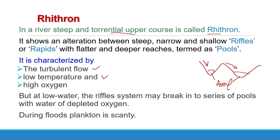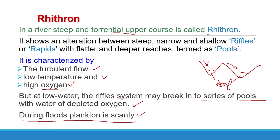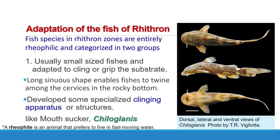The Rhithron is characterized by turbulent flow and relatively low temperatures. Because the river is highly agitated, the water is highly oxygenated, but at low water the pool and riffle system may break up into a series of pools whose water may become completely depleted of oxygen. During flood, plankton is scanty. Fish species in Rhithron zones are entirely rheophilic and categorized into two groups. The first group includes species which live on or among the rocks and vegetation of the bottom, distributed predominantly in the riffles.